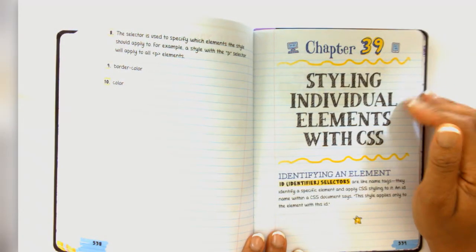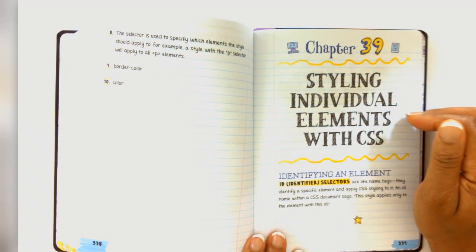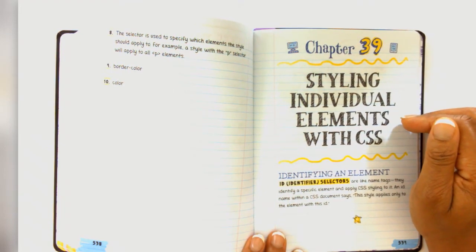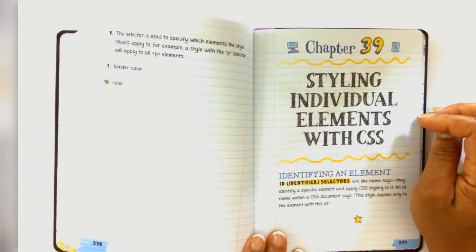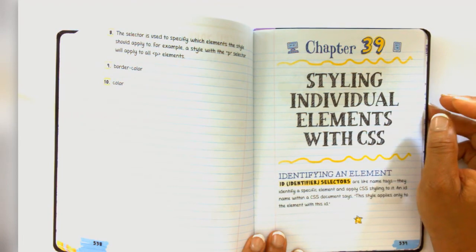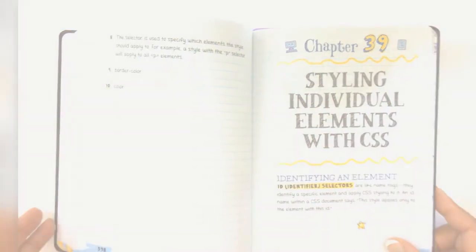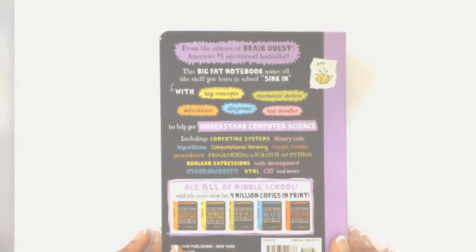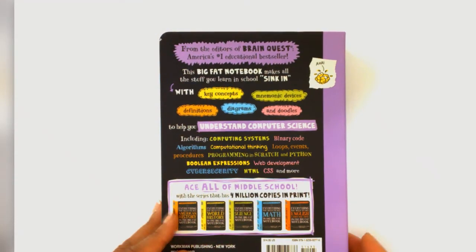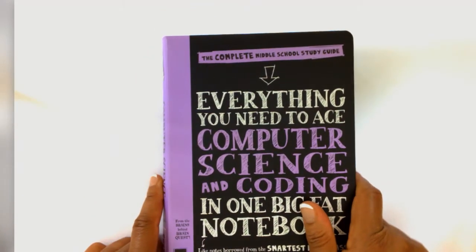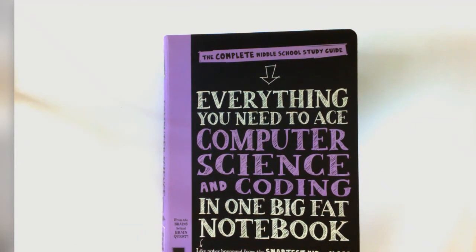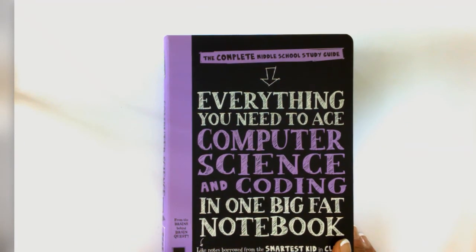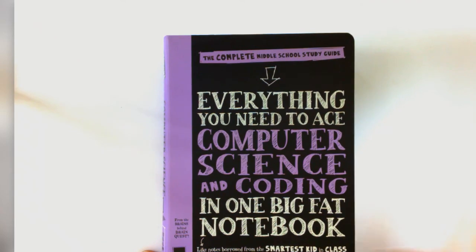This is something that I think I would be interested in reading to give me a good foundation in computer science and coding. And I know that it would definitely be a good foundation for your students as well. So we have come to the end of this flip through and I truly hope that you have enjoyed this video. Tell me what do you think about everything you need to ace computer science and coding. Give me your thoughts down below. Thanks. Bye bye.